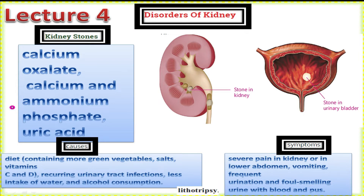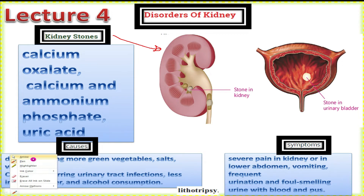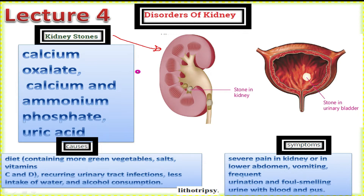Kidney stones form when urine is concentrated, causing crystals to form. For example, calcium, ammonium phosphate, and uric acid crystals. When these crystals grow to a large size, they block the urinary system, causing issues with urine flow to the urinary bladder. These are the major issues of kidney stones.